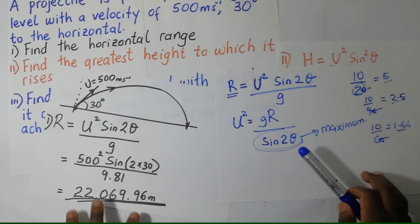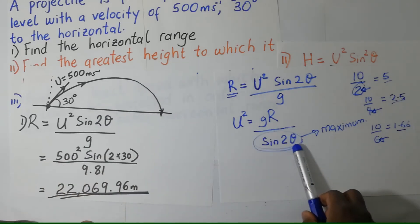Now, as far as this goes here, we have sine 2 theta. That is what is in the denominator. And the maximum value of sine 2 theta is 1.